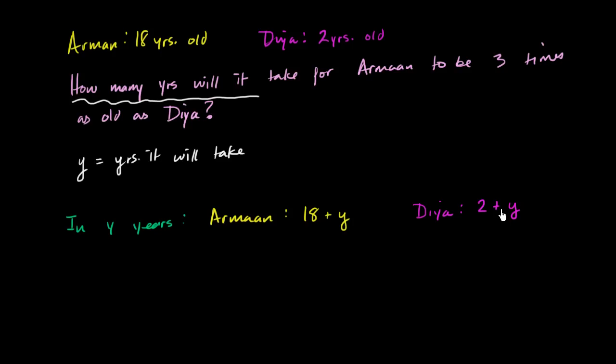So what we're curious about, now that we know this, is how many years will it take for this quantity, for this expression, to be three times this quantity? So we're really curious. We want to solve for y such that 18 plus y is going to be equal to three times two plus y. Three times two plus y.